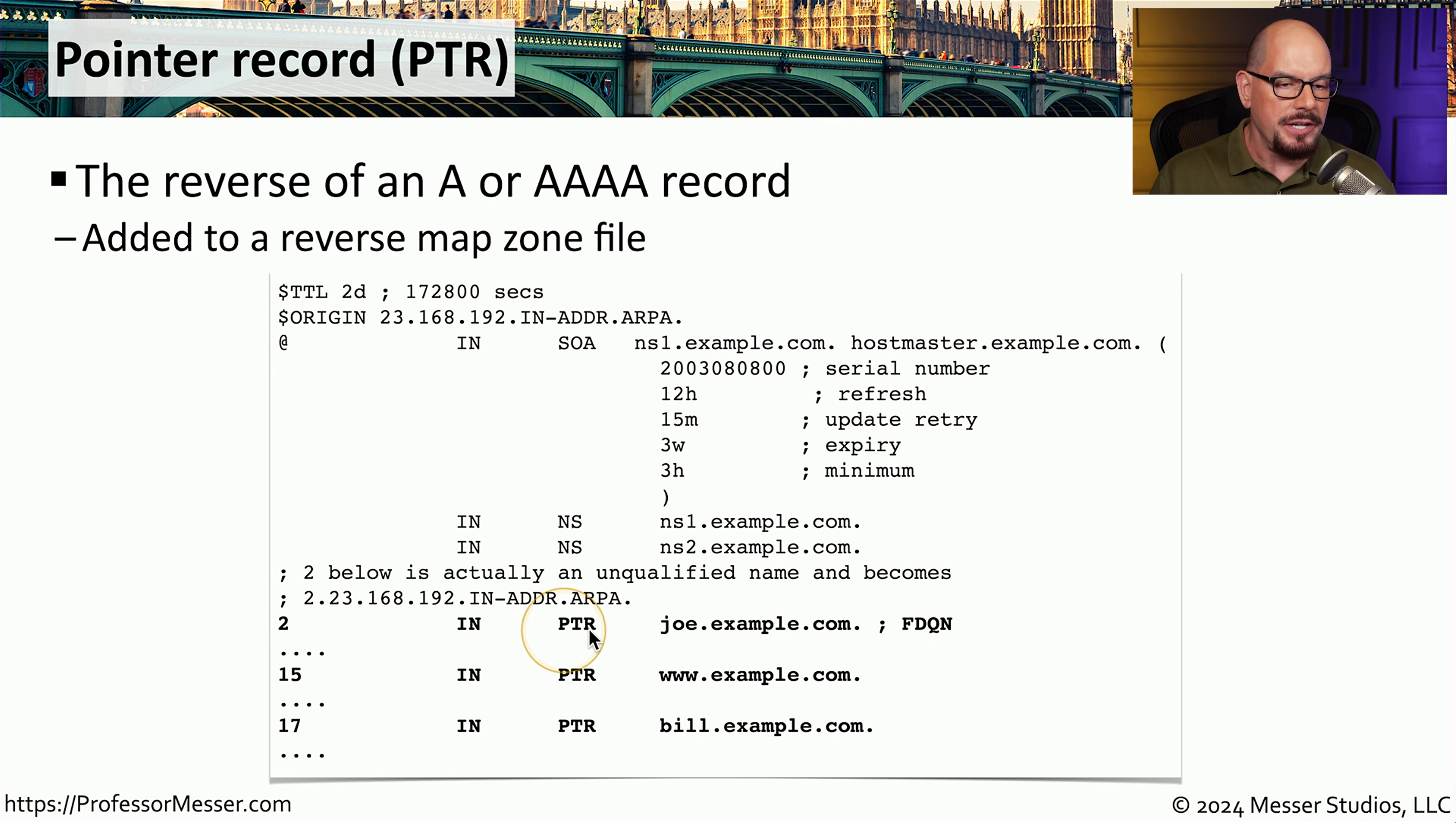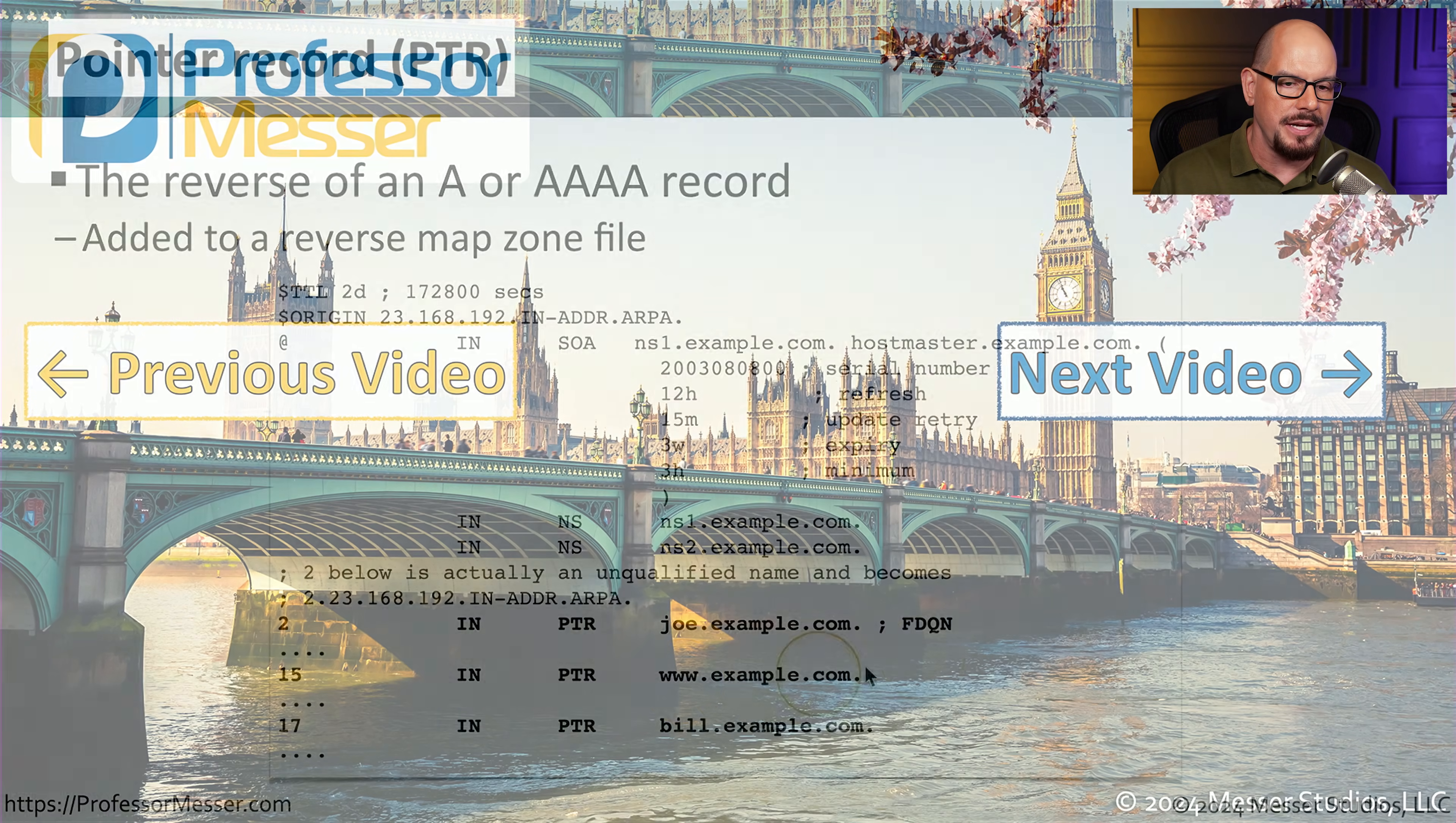For example, on this DNS server, we have a number of pointer records, three different ones listed for joe.example.com, www.example.com, and bill.example.com. You'll notice there is a number associated with each of those, and that refers back to the IP address associated with that particular subnet. In the DNS configuration, those IP addresses are shown in reverse. So this is for the IP address 192.168.23.2 is joe.example.com, 192.168.23.15 is www.example.com, and 192.168.23.17 is bill.example.com. If we then perform a reverse DNS query to this server and we're requesting the IP address of 192.168.23.15, we will receive back the response of www.example.com.